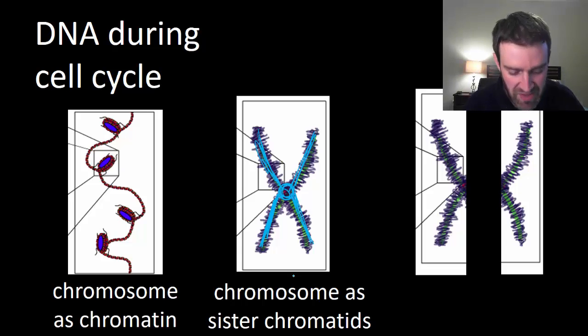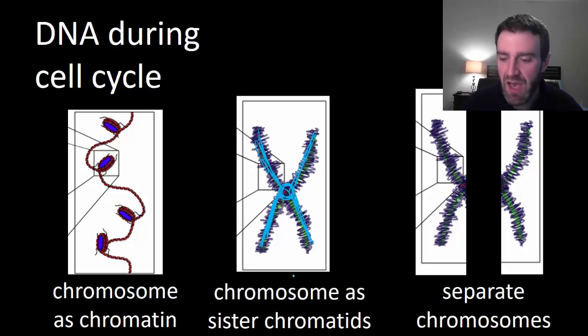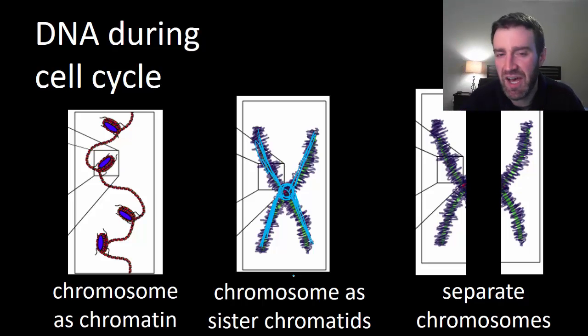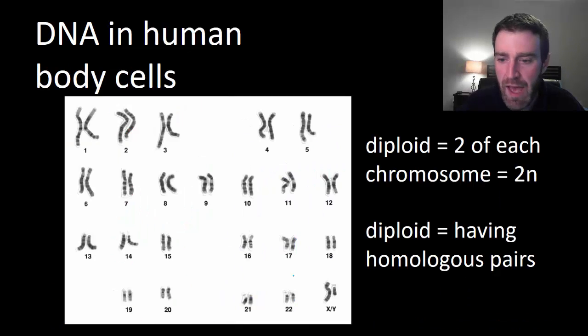It's a convenient way to make sure we distribute the chromosomes equally to the new cells. Once they split up we can kind of consider them separate chromosomes. Technically they haven't unpacked yet, although once they really separate from each other they pretty quickly unpack after that back to chromatin form.